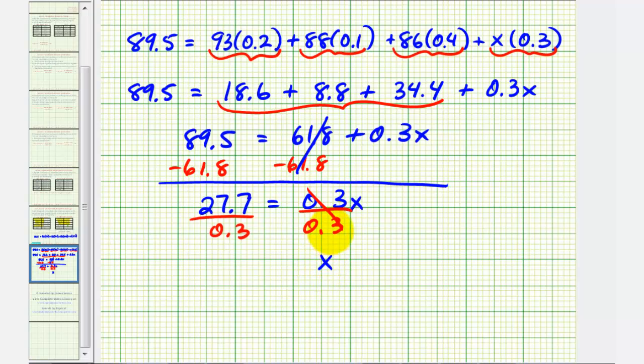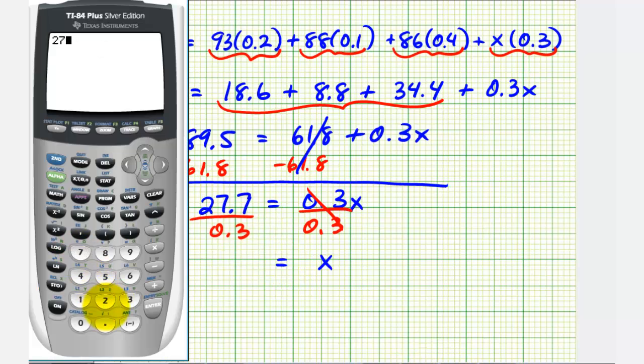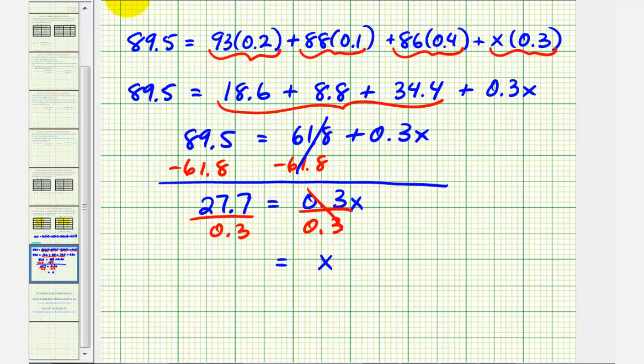So X, the minimum final exam score to receive an A, will be equal to this quotient here. So we'll go to the calculator. We have 27.7 divided by 0.3. So the exact value would be 92.3 repeating, which we can write as 92.3 with a bar across the three.